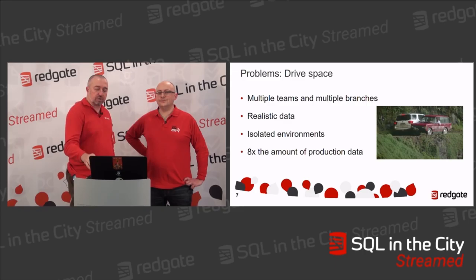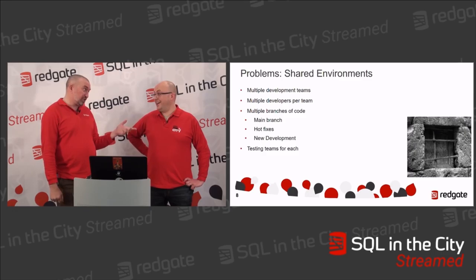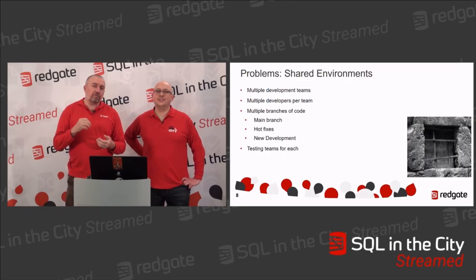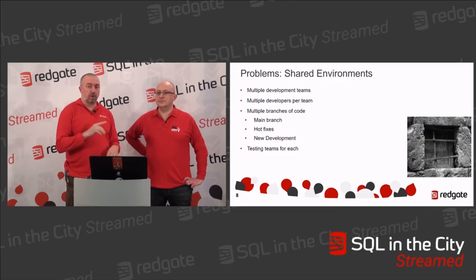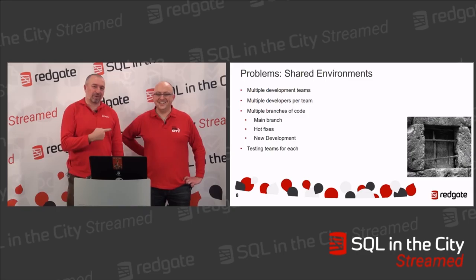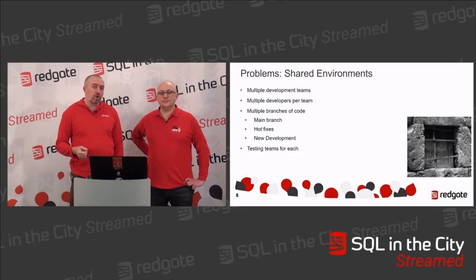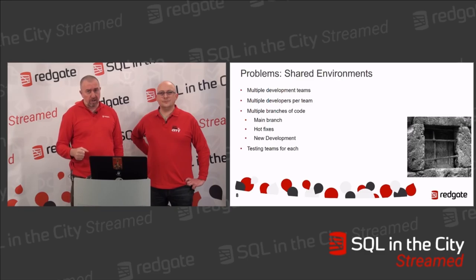Another problem is shared environments. If you have multiple development teams all trying to share one environment, you hit issues. If you've lived it, you know it. Even if you're a great team, this hurts. With multiple developers, multiple teams, and multiple branches on code — the whole concept of a shared environment for dev is crazy. You've got to move away from this because you're going to be stepping on each other's toes, regardless of how well you get along. You've got hotfix branches, new development, all these multiple branches going on. And you've got testing on top of that for each of those teams.